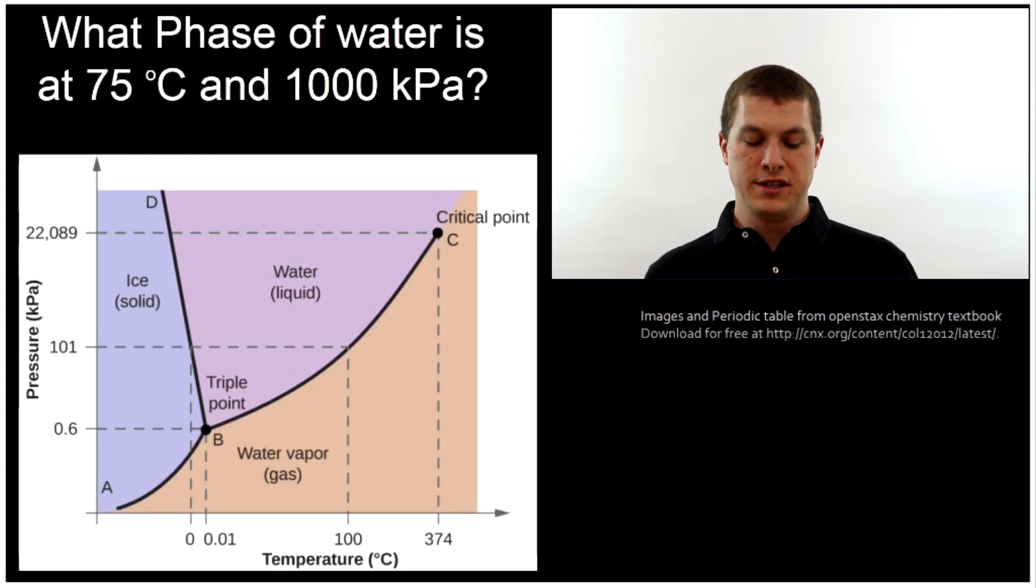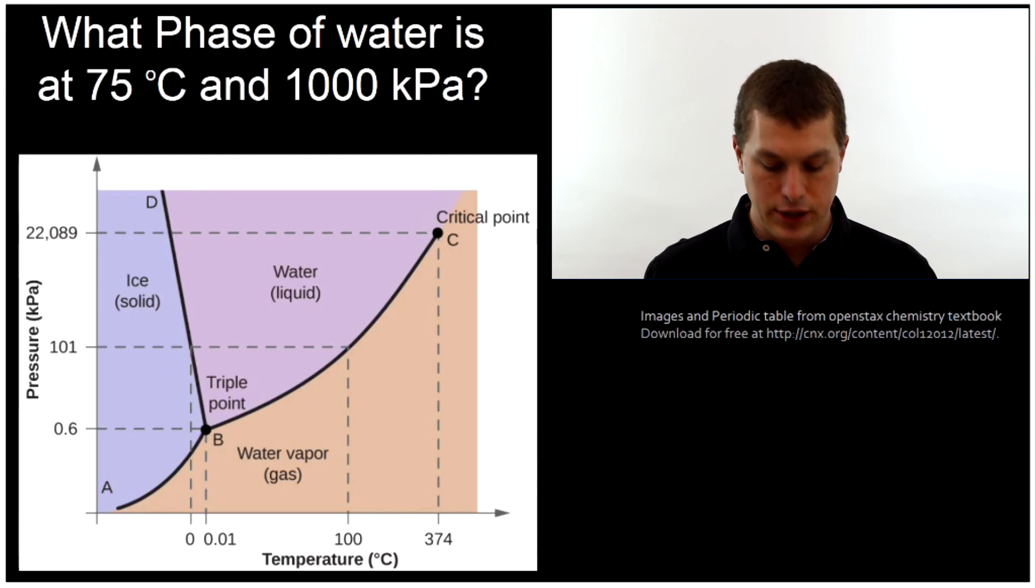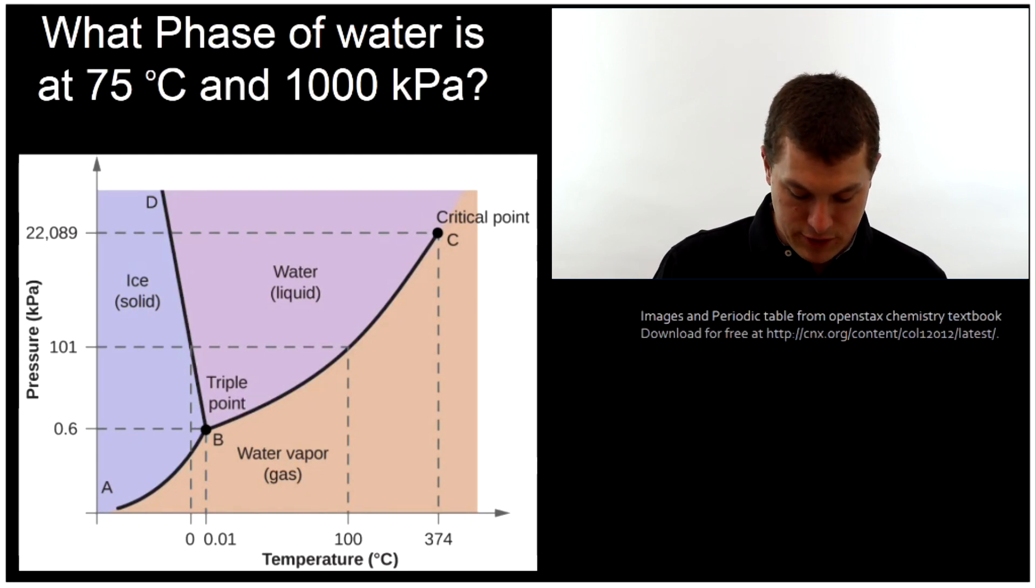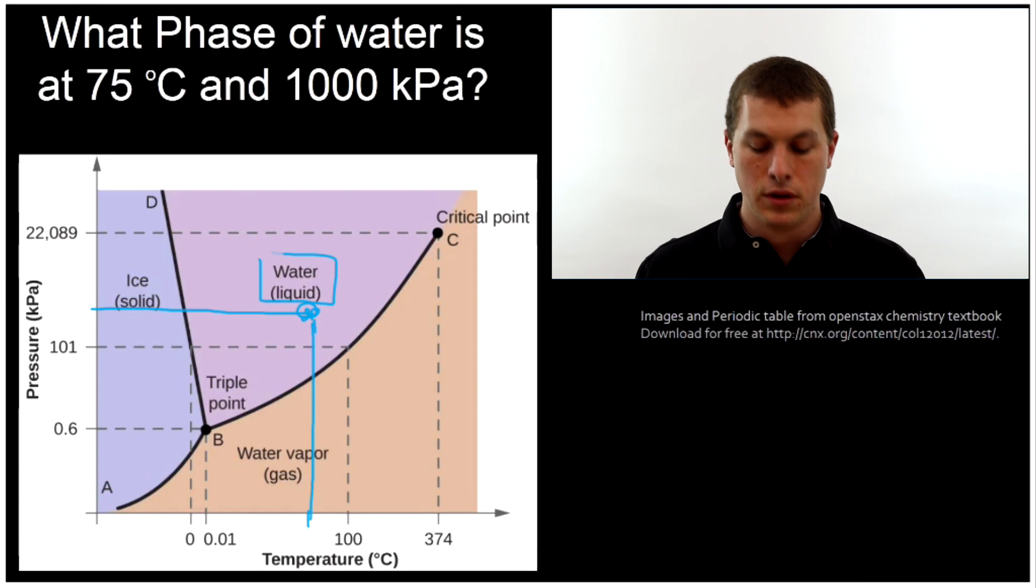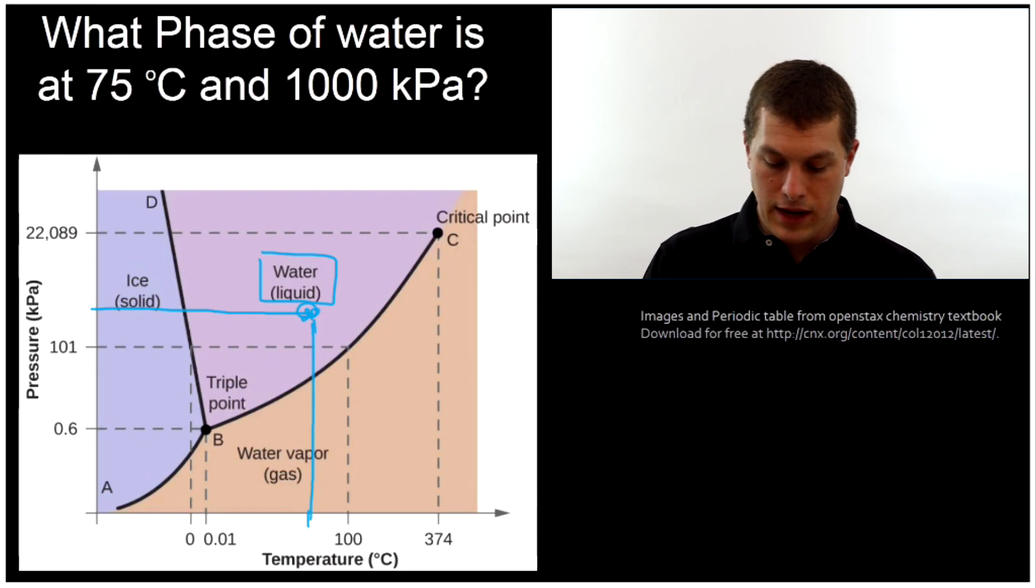What phase of water is present at 75 degrees Celsius and a thousand kilopascals? Well, if we go to 75 degrees Celsius, that's maybe somewhere around there. And then we go to a thousand kilopascals, that's maybe somewhere around there. And if we see where those meet, right about there, what phase is that? Well, that's liquid water. So everywhere in that purple region is liquid water. That tells us a bunch of different pressures and temperatures as order pairs that are liquid.